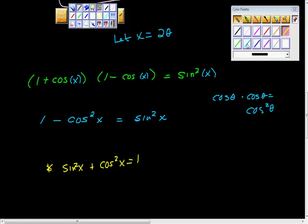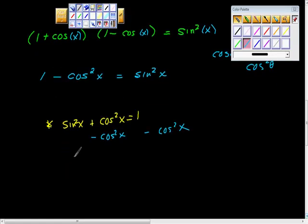I'm just going to rearrange this a little bit. I'm going to take -cos²x to prove this out. And we'll get sin²x = 1 - cos²x.